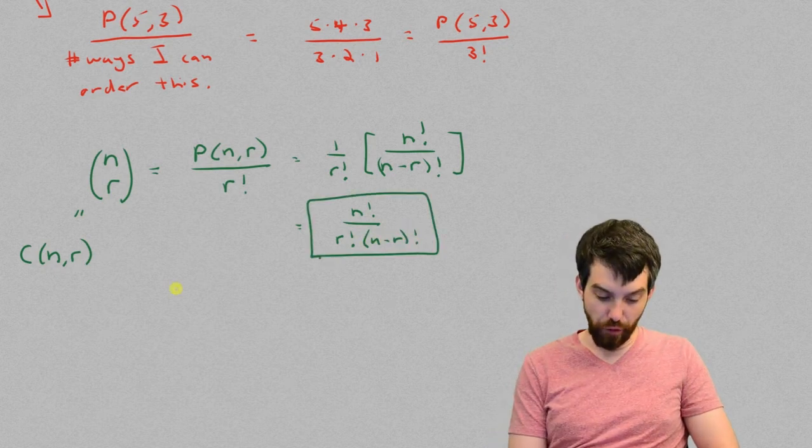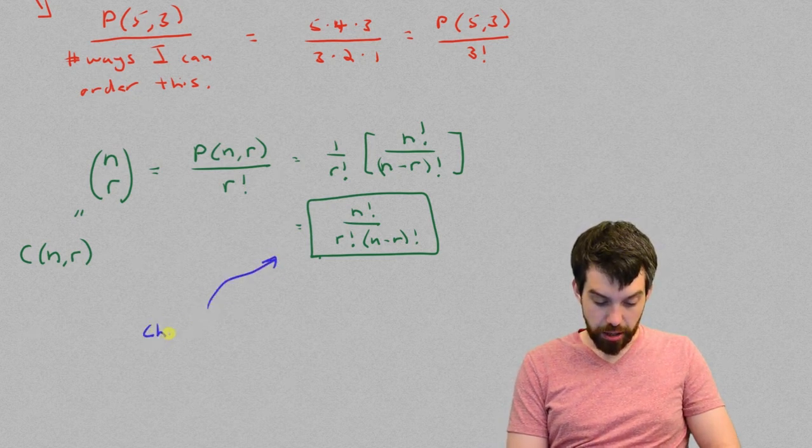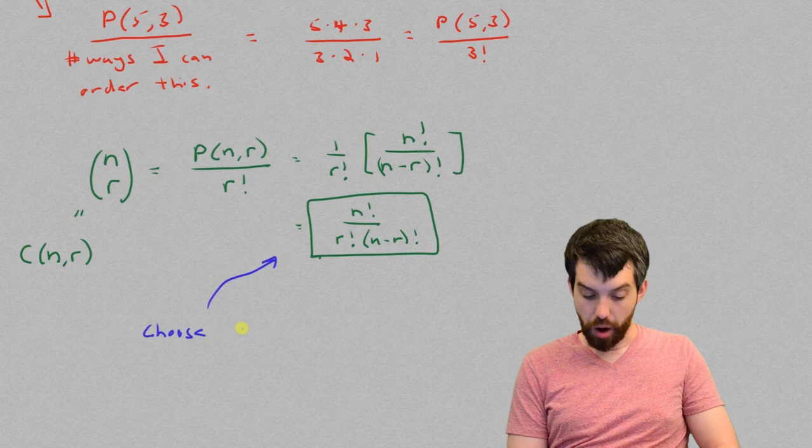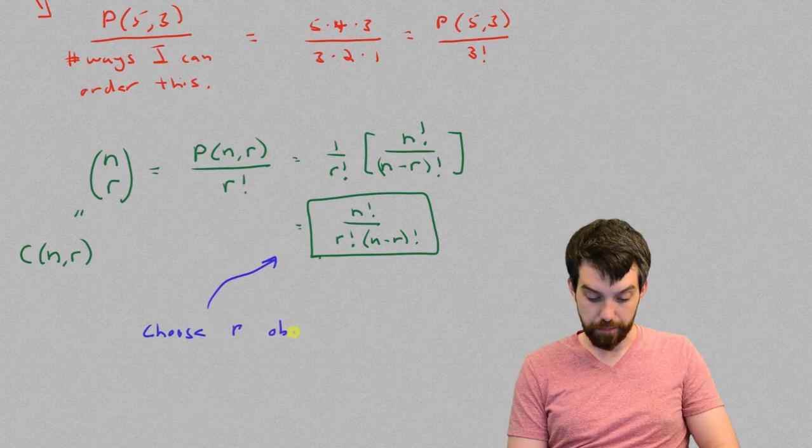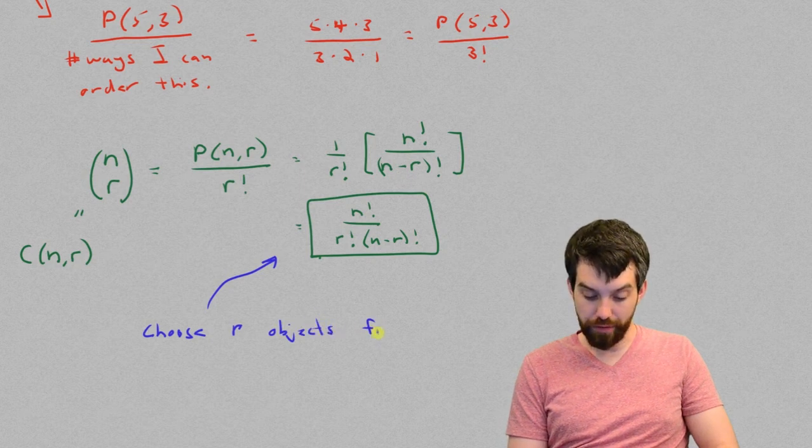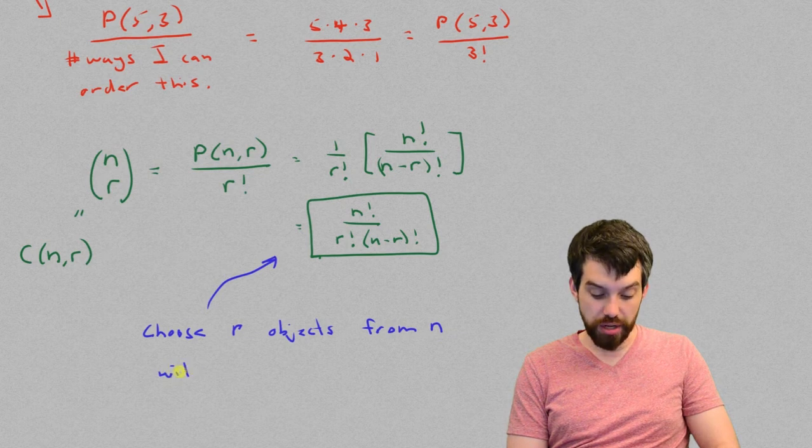And so this formula that I've got in here, this is how I choose r objects, r is the smaller one, r objects from a total of n without caring about my order.